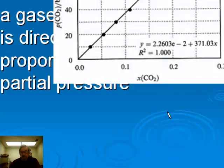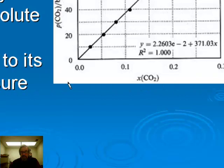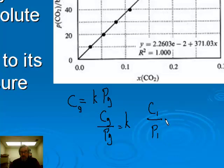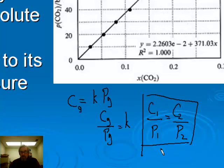Mathematically, since Henry's law is a direct proportionality, the concentration of any gas at saturation equals a constant times the partial pressure of that gas. As a two-point form: the concentration divided by its partial pressure is a constant, so C₁/P₁ = C₂/P₂. This two-point form of Henry's law can be used to make predictions about how much gas dissolves at a given pressure.